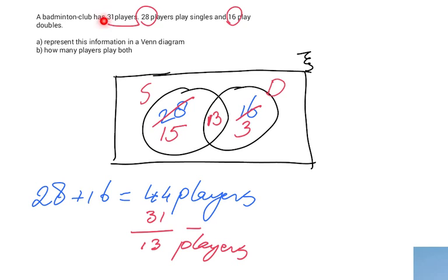Plus 3 gives your 31 players. Because again, I counted those 13 players double, because they play both singles and doubles.